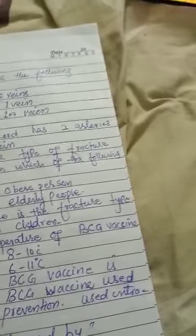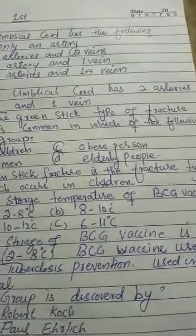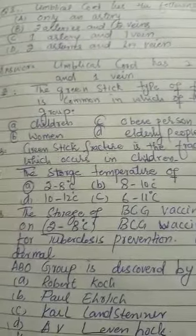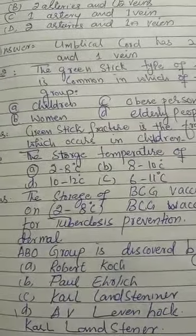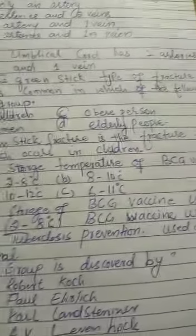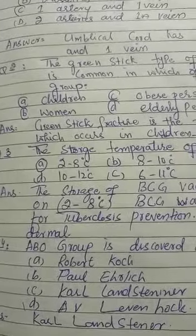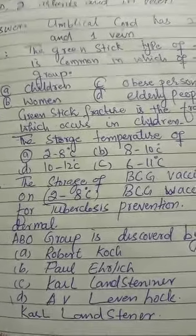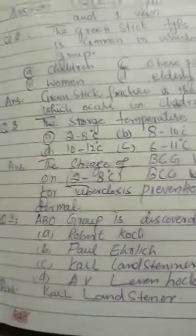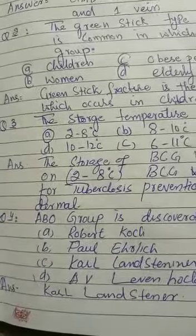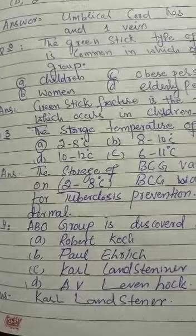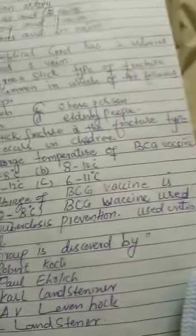BCG vaccine is used for tuberculosis prevention via intradermal route. Next question: ABO blood group was discovered by — A. Robert Koch. B. Paul Ehrlich. C. Carl Landsteiner. D. Antonie van Leeuwenhoek. Answer: Carl Landsteiner discovered the ABO blood group.